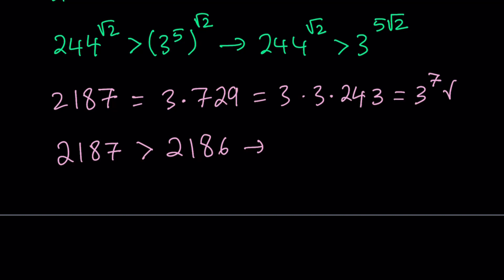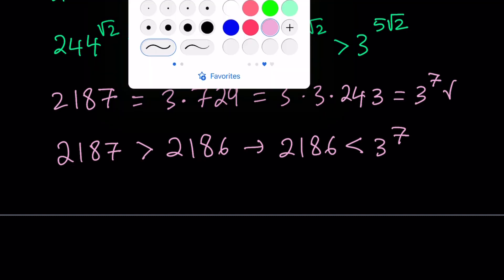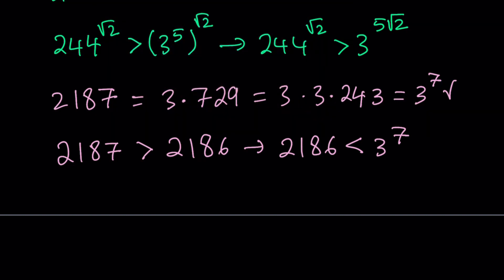This implies that we can associate 2,186 with a power of 3, because 2,187 is 3 to the 7th power. I can safely say that 2,186 is less than 3 to the 7th power. So now we do have two facts. And what we're going to do is, we're going to put those two together. That way, we can build a bridge between these two inequalities.